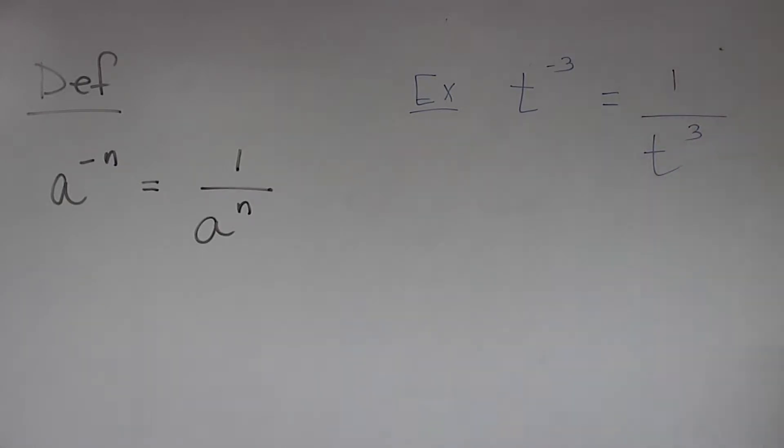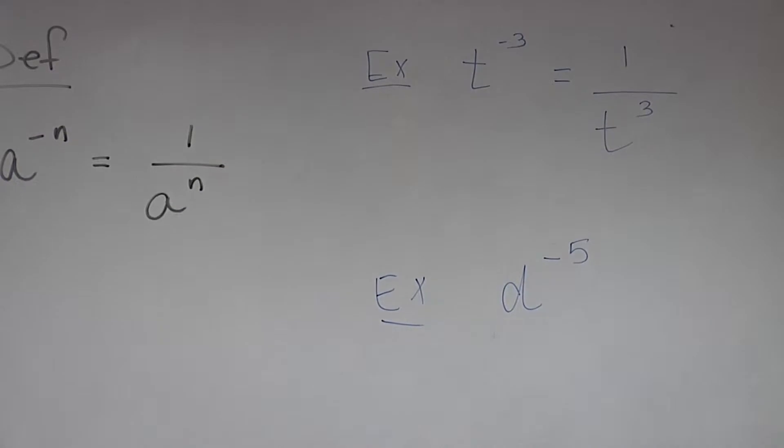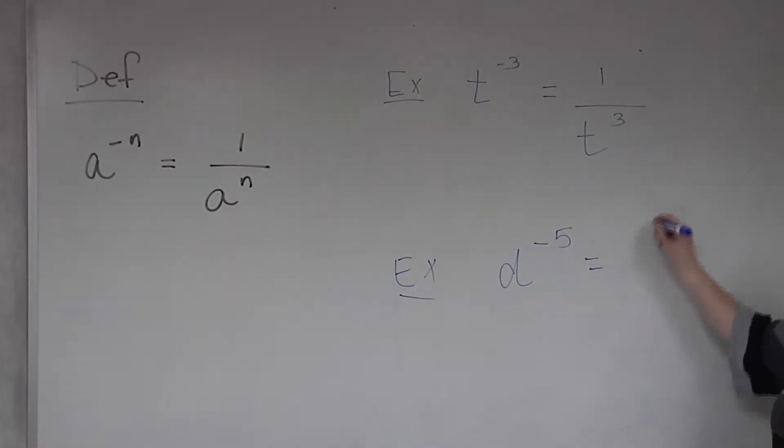Exactly. It will become the denominator. d to the negative 5. 1 over d to the fifth.